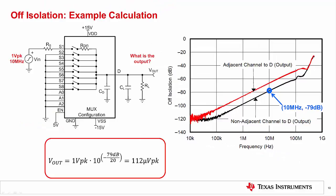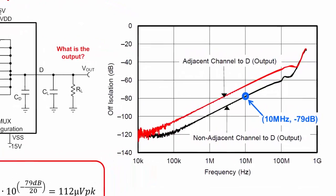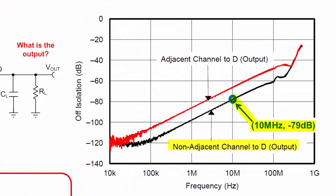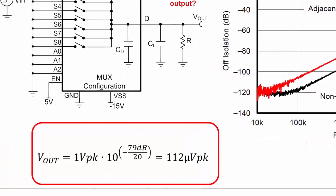Here is an example of how to predict the signal on an off channel using the off-isolation specification. A 1 volt peak 10 MHz signal is applied to channel S1, which is turned off and is not physically adjacent to the output pin. Using the off-isolation plot, the off-isolation is approximately negative 79 dB at 10 MHz for a non-adjacent channel. Rearranging the off-isolation equation and using an input voltage of 1 volt peak and negative 79 dB, we find that the output signal is 112 microvolts peak.